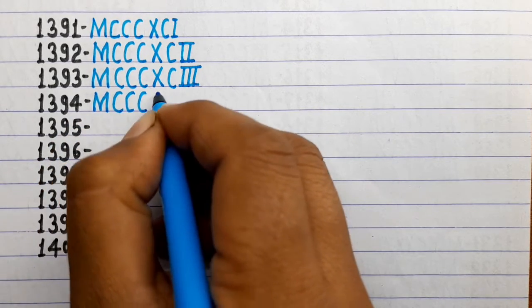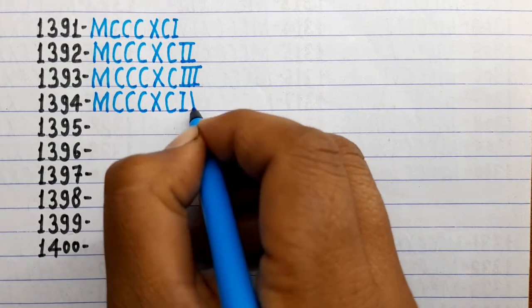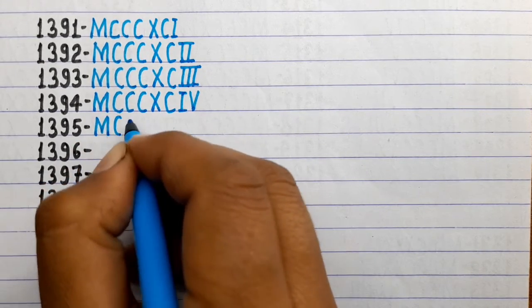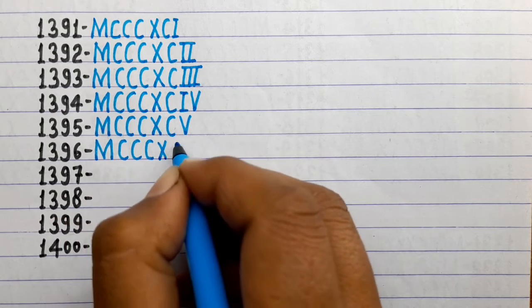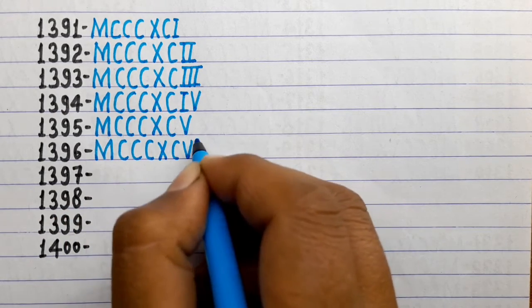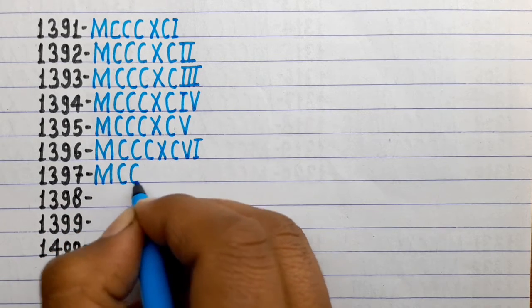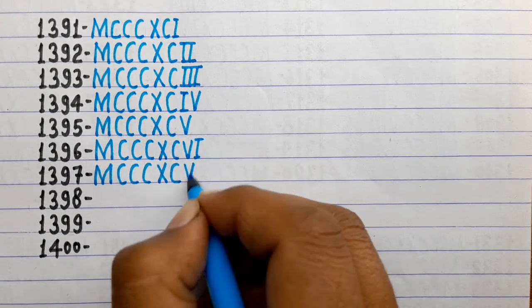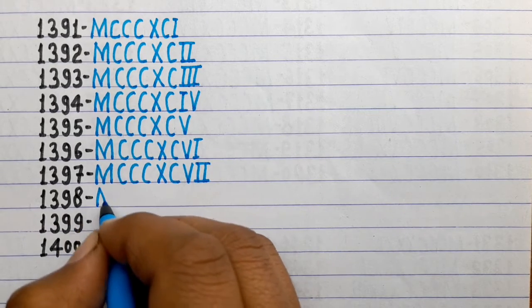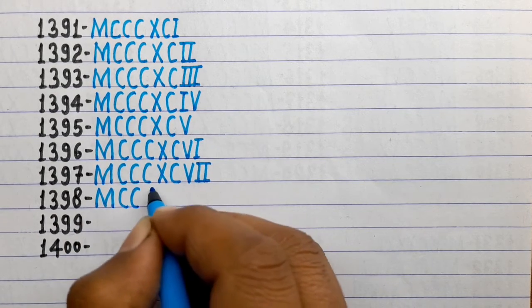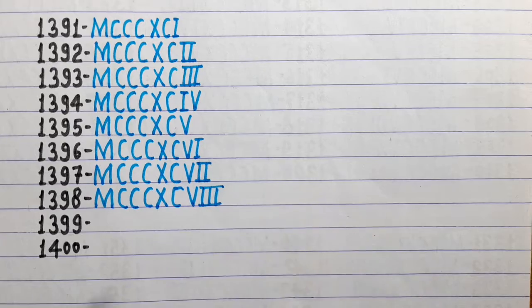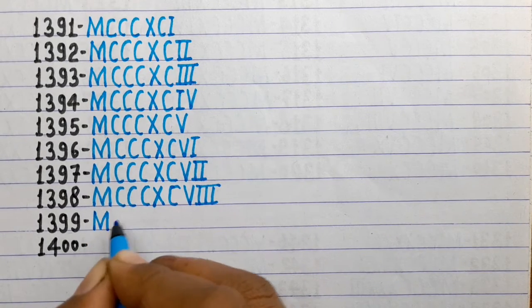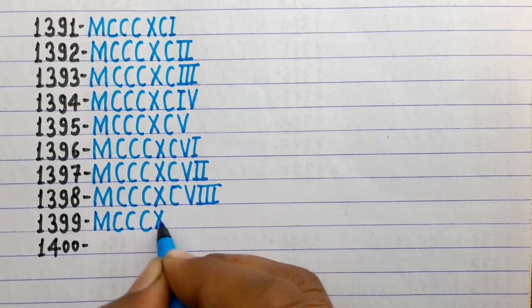1394 is MCCCXCIV. 1395 is MCCCXCV. 1396 is MCCCXCVI. 1397 is MCCCXCVII. 1398 is MCCCXCVIII. 1399 is MCCCXCIX.